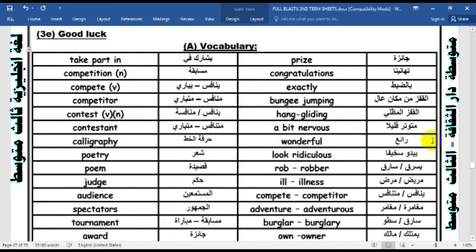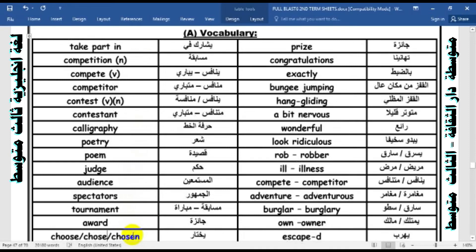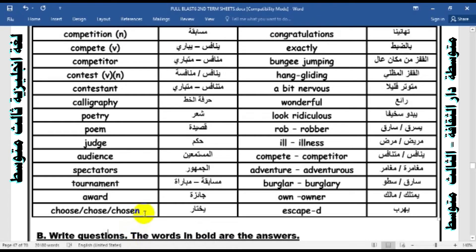The first column: take part in, competition, compete, competitor, contest. We can use this word as a verb and as a noun. Contestant, calligraphy, poetry, poem, judge, audience, spectators, tournament, award, choose, chose, chosen. Let's move to the second column.